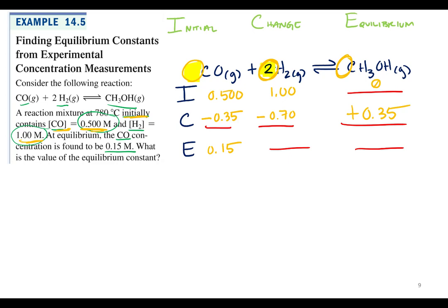And now comes the hard part. What's 1 minus 0.7? 0.3. And then 0 plus 0.35. 0.35. So once you get those change lines, you can figure out the equilibrium concentration.